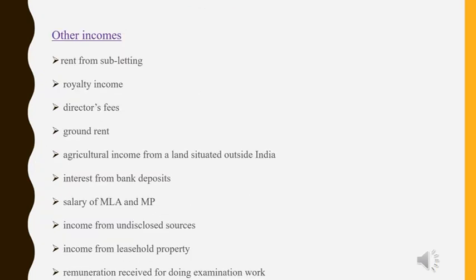Some other incomes taxable under income from other sources are: rent from subletting, royalty income, director's fees, ground rent, agricultural income from land situated outside India (similar to dividend — agriculture income inside India is exempted, but from land outside India is taxable), interest from bank deposits, salary of MLA and MP (salary is taxable, but daily allowance of MLA and MP is exempted), income from undisclosed sources, income from leasehold property, and remuneration received for doing examination work. All these incomes are taxable and any expenses incurred to earn the income can be claimed as a deduction.